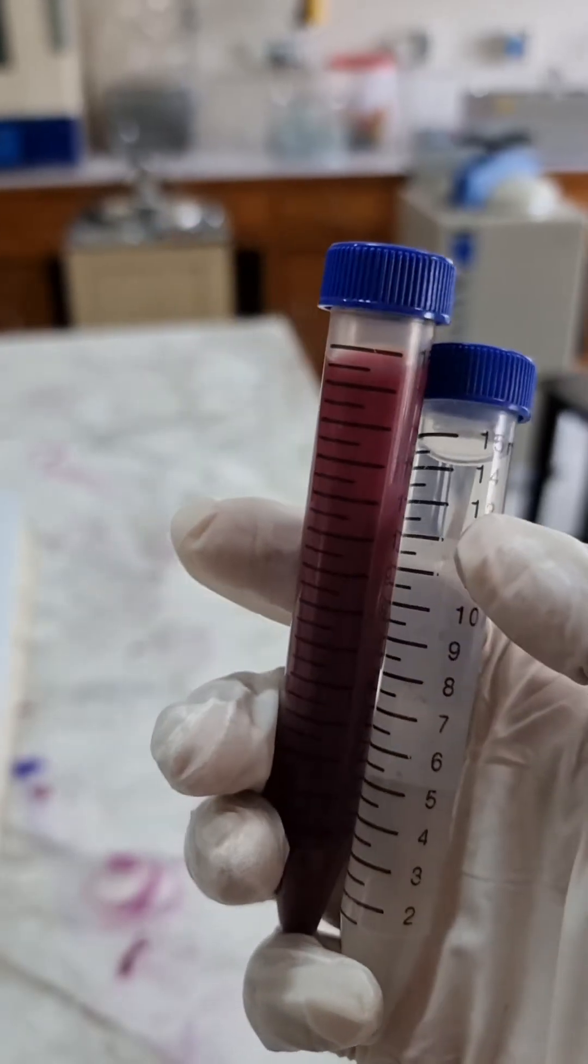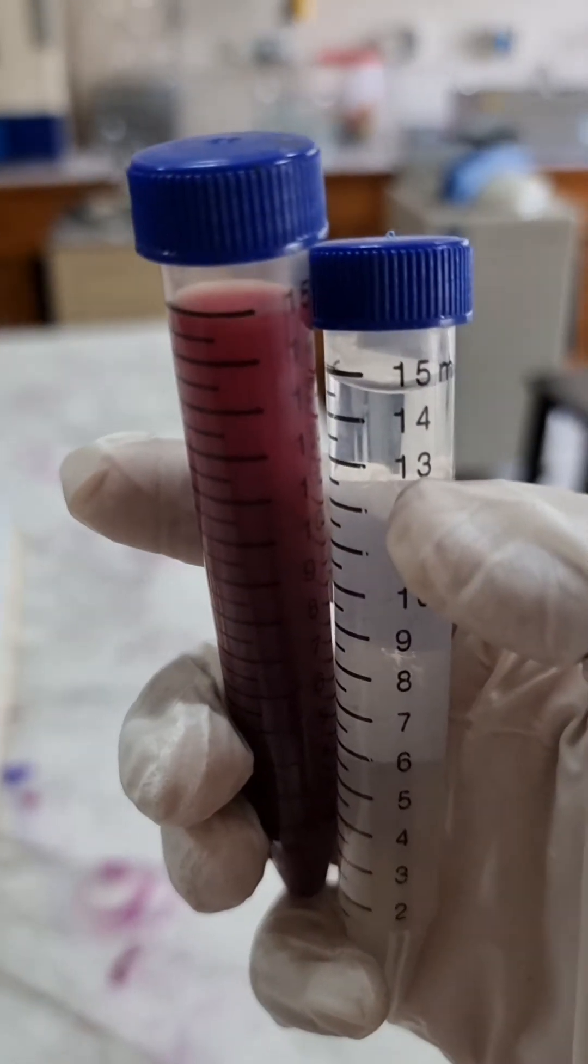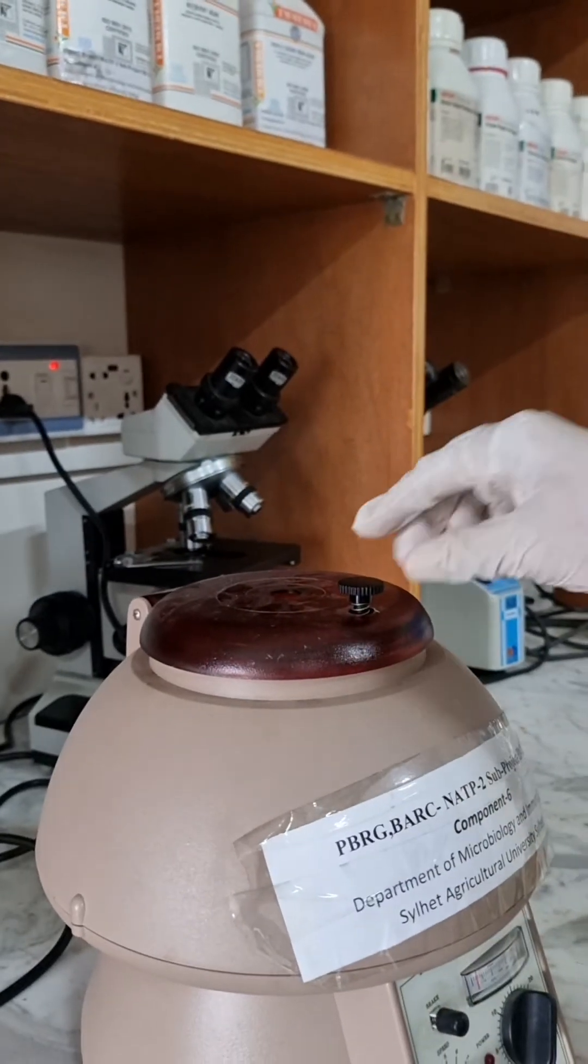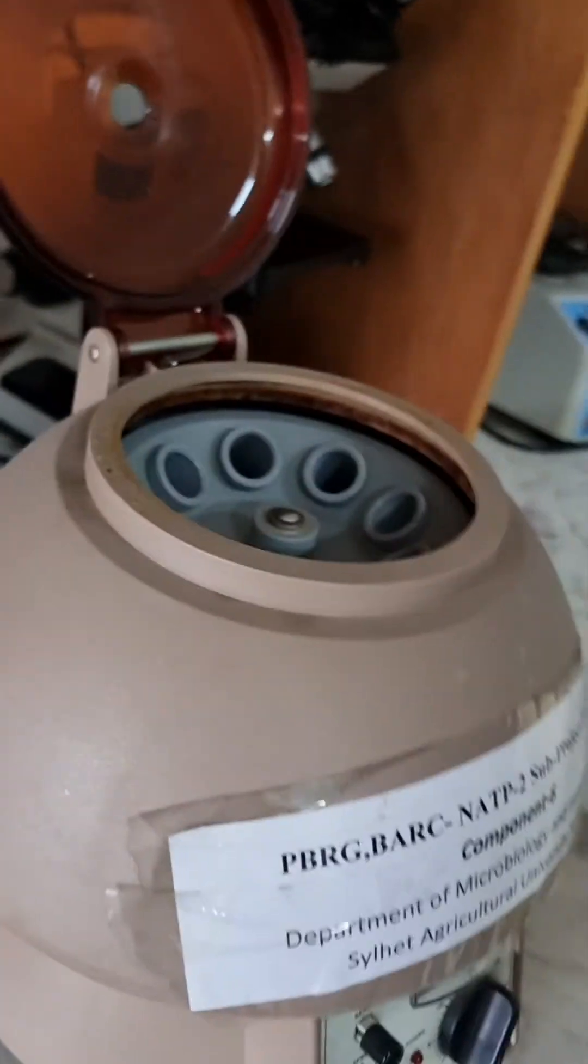Here we have added PBS to the collected blood and have taken the same amount of distilled water in another falcon tube to maintain balance during centrifugation.